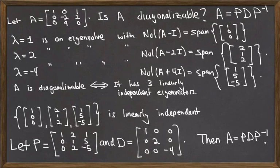Yes, this matrix is diagonalizable because it had three linearly independent eigenvectors. Those three eigenvectors determine the matrix P, and the corresponding eigenvalues determine the matrix D.